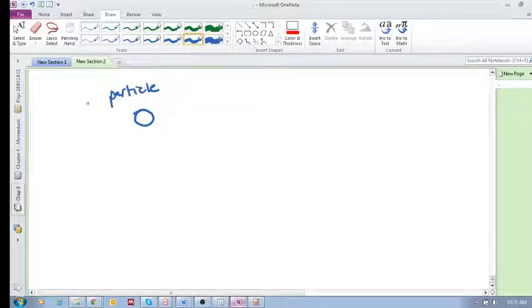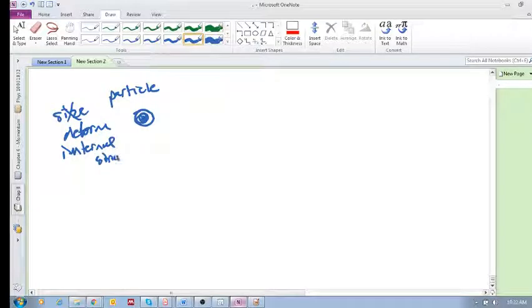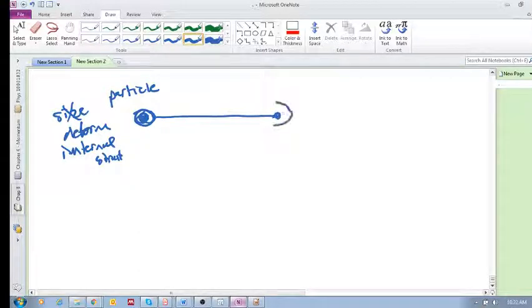Which means that effectively we don't consider its size. All mass is concentrated into a single point. It's got no size, it can't deform, it's got no internal structure. And then what we did was we often had it connected to a cable or to a negligible rod, and it rotated about some point, which is called the axis of rotation.